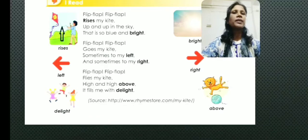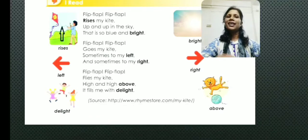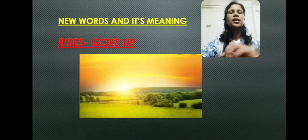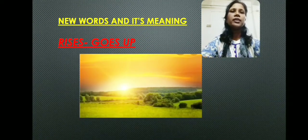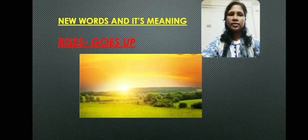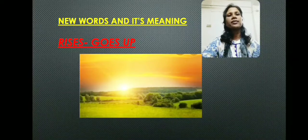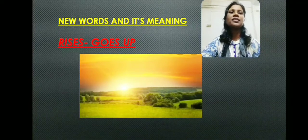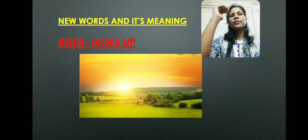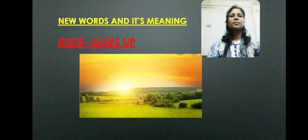I will be doing the explanation of this poem in my next class. Now let us move towards the new words. The first new word in this lesson is 'rises.' Rises means goes up. The spelling of rises is R-I-S-E-S. In this picture, you can see the sun rises in the east — the sun goes up whenever it rises, it just goes up in the sky. That is the meaning of rises.